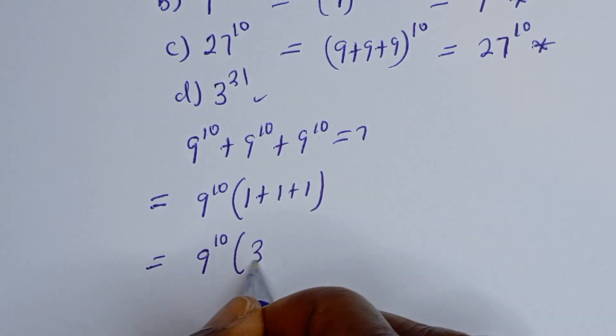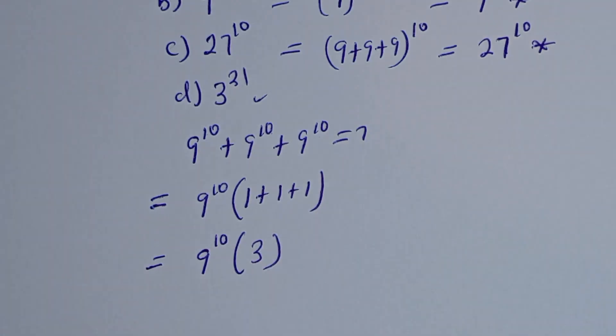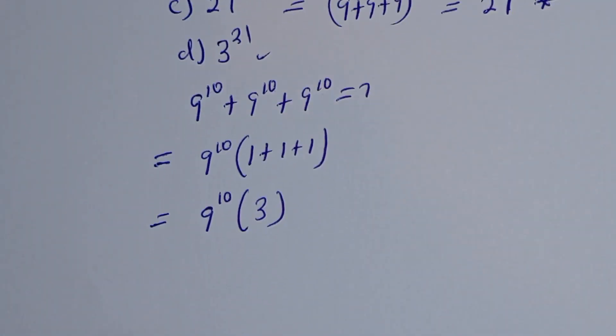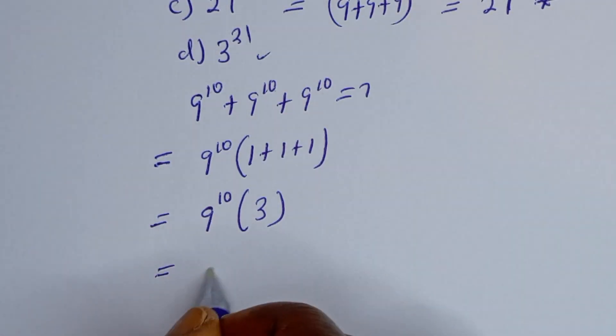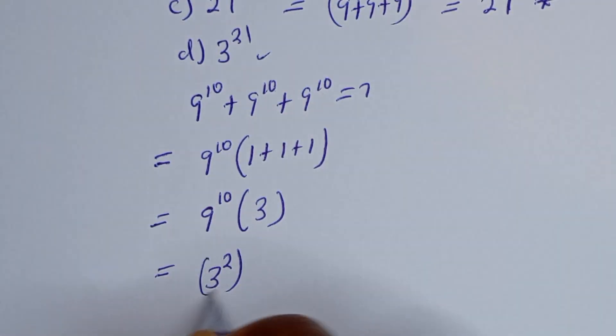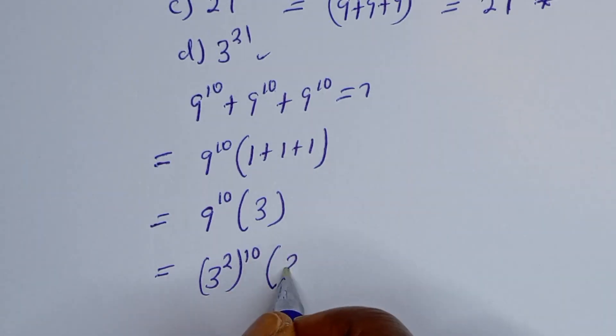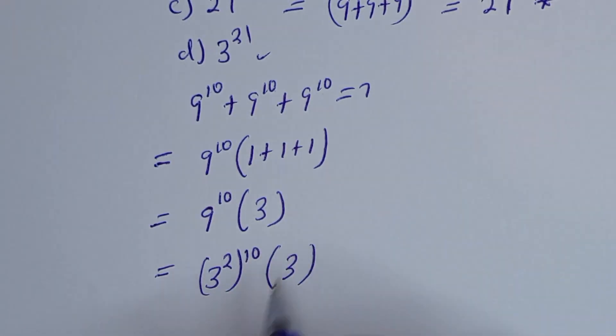This equals 9 to the power of 10 times 3. Now 9 to the power of 10 can be written as 3 squared to the power of 10, times 3.